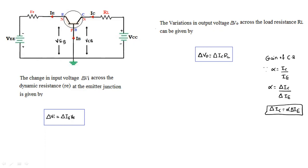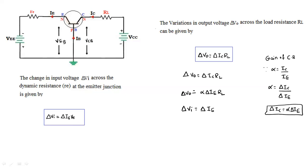Substituting delta_ic = alpha × delta_ie into the output voltage equation: delta_v0 = alpha × delta_ie × RL. The input voltage equation remains: delta_vi = delta_ie × re.